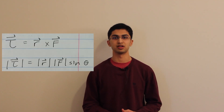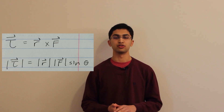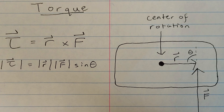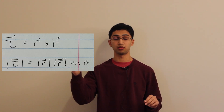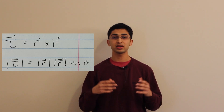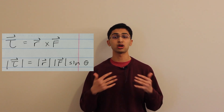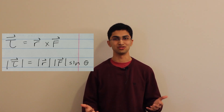A staple example and use of the cross product is torque — a rotational force that determines how much an object can rotate, or more precisely, how much it can change an object's angular momentum. Torque is represented by the cross product: tau equals r cross F. This means you apply a force F on some object at a distance r from its center of rotation. I'll be explaining torque conceptually to show you why you would ever need to use a cross product.